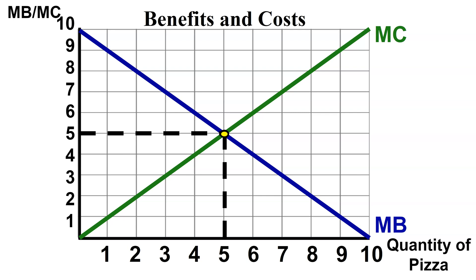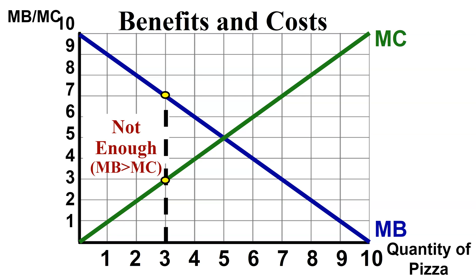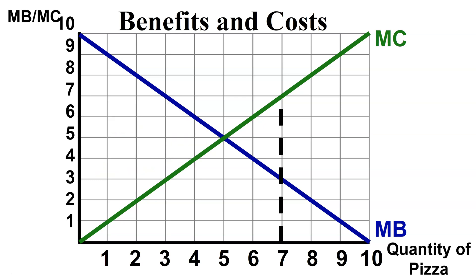Using pizza as the example: we decide how many slices to eat based on the marginal cost of buying and paying for the pizza, and the marginal benefits we get from each slice. We're looking for where marginal cost meets marginal benefit. If we eat only three slices and marginal benefit is still greater than marginal cost, we haven't reached equilibrium — we're still hungry, not satiated. So we have a deadweight loss.